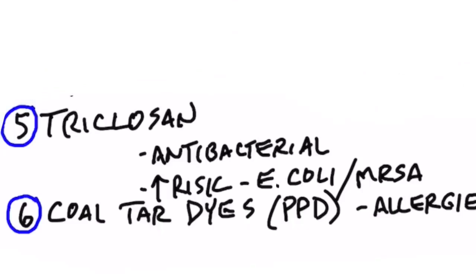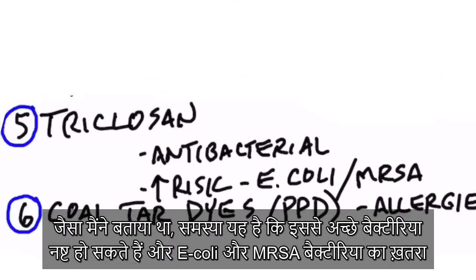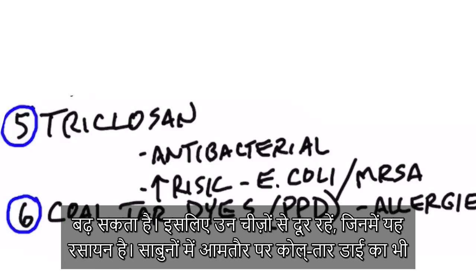Next is something called triclosan. Triclosan is a very powerful antibacterial chemical, but the problem is it can kill off the good bacteria and increase the risk of E. coli and even MRSA. So avoid things with this chemical.